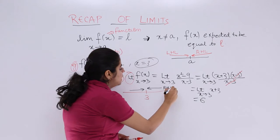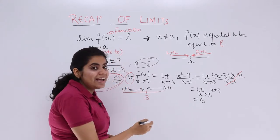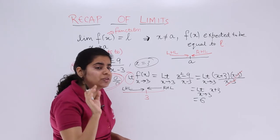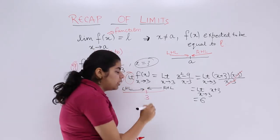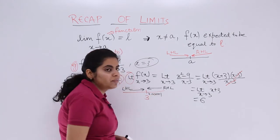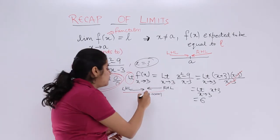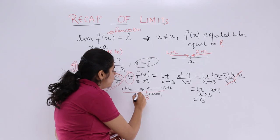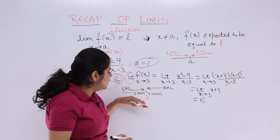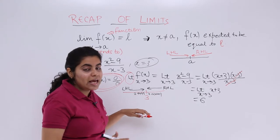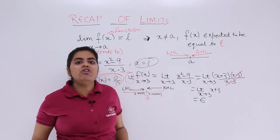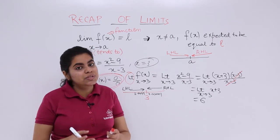This becomes your right-hand limit, this becomes your left-hand limit. Just near to 3, suppose a point like 3.00001, and on the left-hand side 2.9999. When these values are there, the function value is expected to reach 6 and not exactly equal to 6.